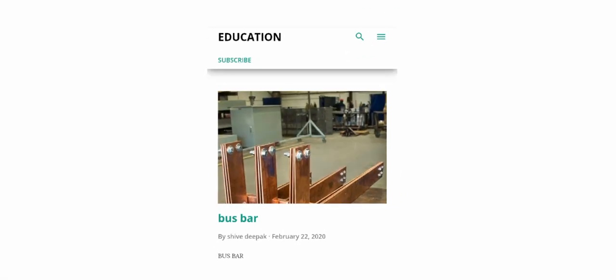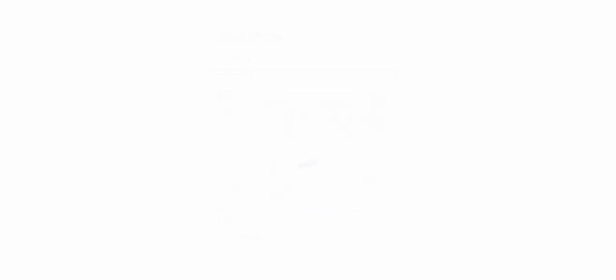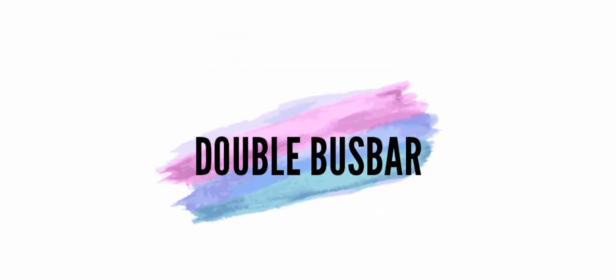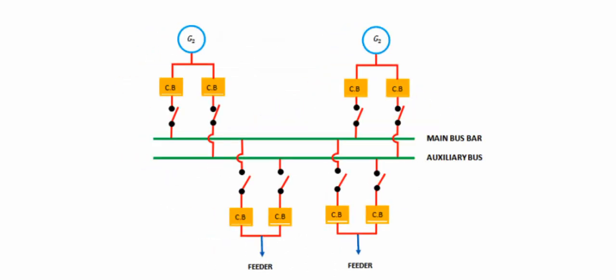First, let's check the double bus bar. I have already posted the bus bar in the description. Let's talk about the bus bar — we are going to put a group of conductors. Let's check the double bus bar. There are two bus bars. You can see the main bus bar as the actual bus bar.